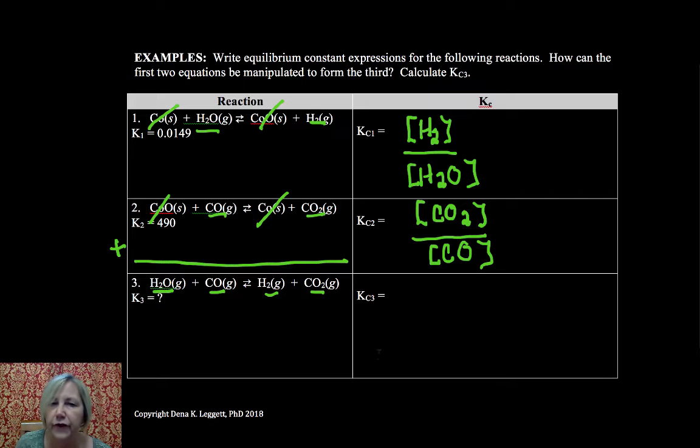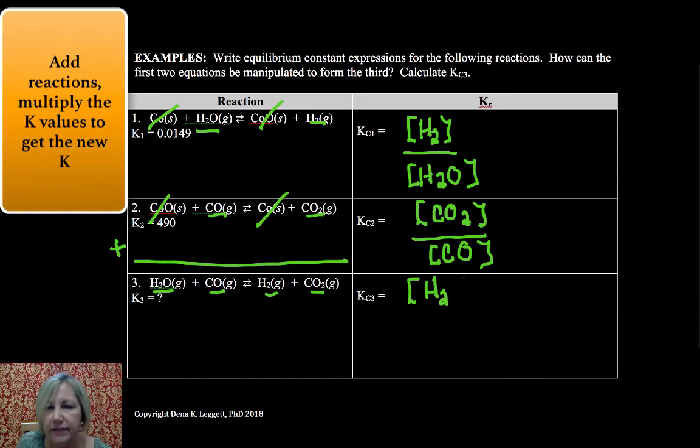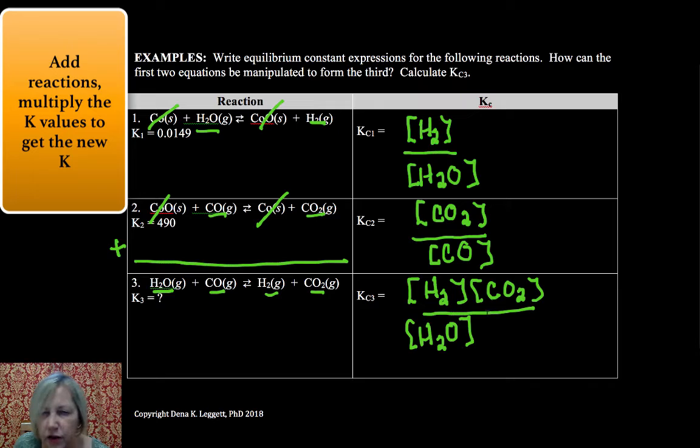So let's write the K for that and see if we can figure out the relationship that K3 has to our two original reactions. So I have hydrogen, all gases, so we include them all. CO2 over H2O. I'm doing this in black with bright colors. One of my students, Rachel, said she really liked this, so I thought I'd do a few videos for her this way.